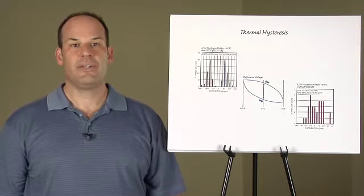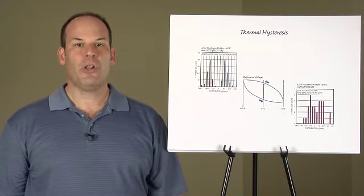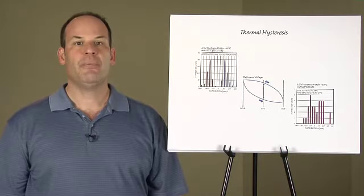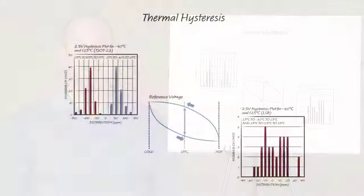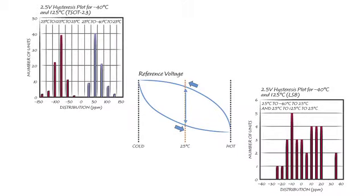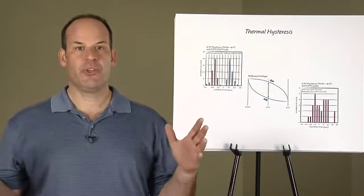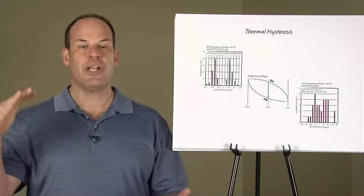As with any hysteretic effect, if the temperature extremes remain constant, the output voltage will follow a repeatable curve versus temperature as the temperature is cycled. This is illustrated by the blue diagram. Note that the output voltage as measured at room temperature will vary between two discrete values depending on whether the previous temperature was cold or hot. In general, wider temperature ranges produce larger changes in output voltage.